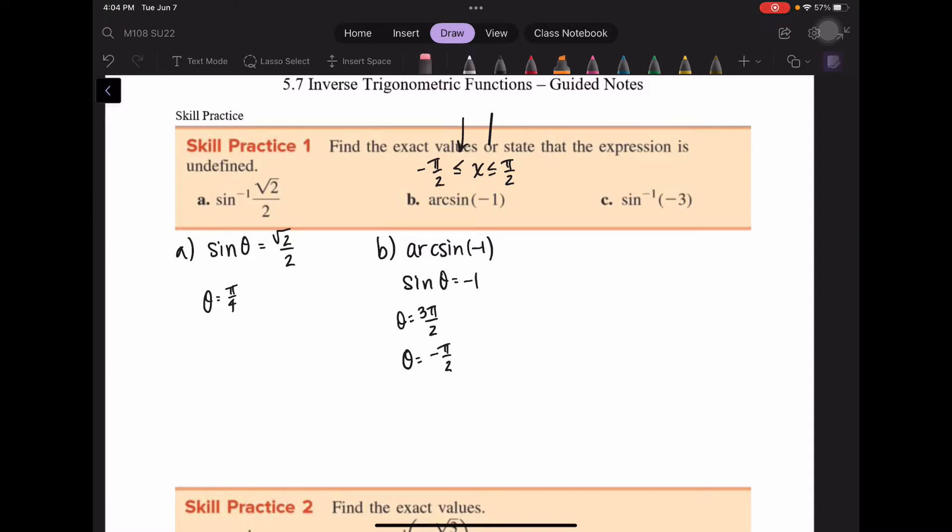Part C is saying that the inverse sine is equal to negative 3. That's saying that the sine of some angle is equal to negative 3. But sine only goes from 1 to negative 1. Sine never reaches negative 3 unless you have some sort of amplitude change, which we don't here. So this is undefined.